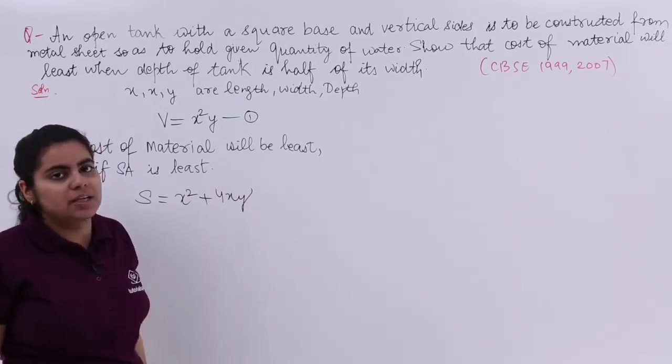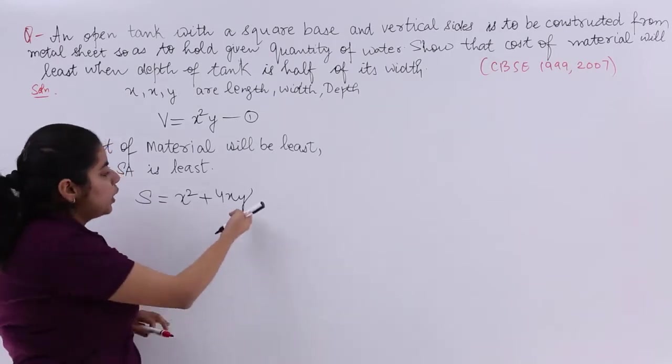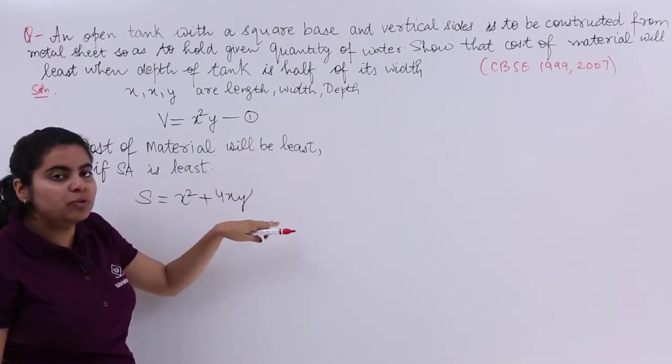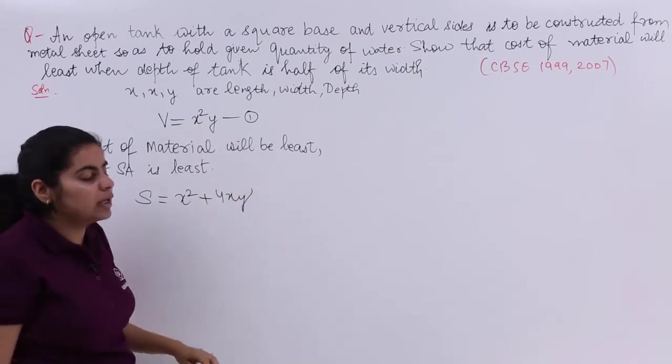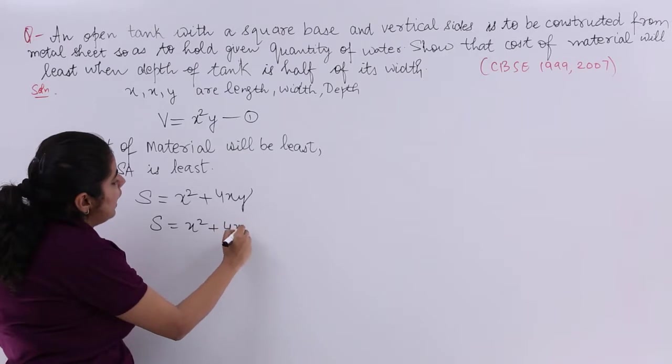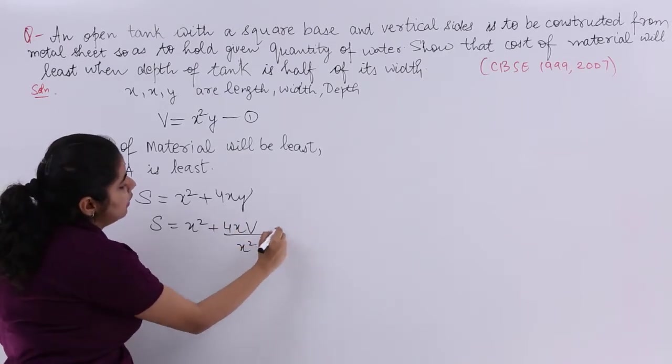So S = x² + 4xy. Now we do not want y. Let us eliminate y by putting the value from equation number 1. So S = x² + 4xy = x² + 4x(V/x²) from equation 1.